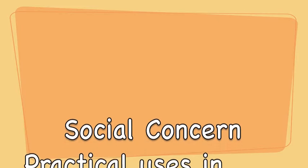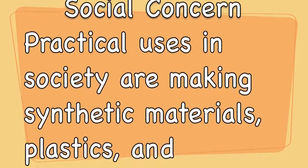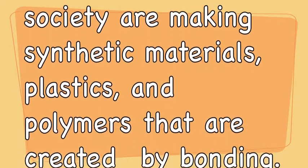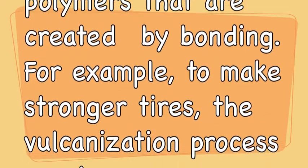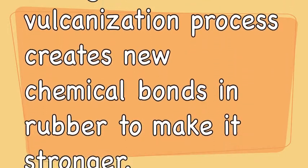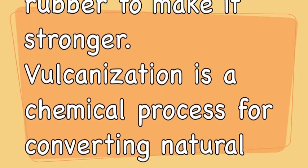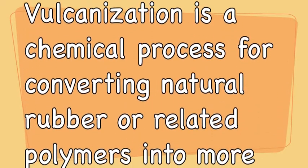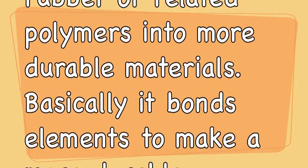So, the social concern is that practical uses in society are making synthetic materials, plastic, and polymers that are created by bonding. For example, to make stronger tires, the vulcanization process creates new chemical bonds and rubber to make it stronger. Vulcanization is a chemical process for converting natural rubber or related polymers into more durable materials. Basically, it bonds elements to make a more durable molecule.